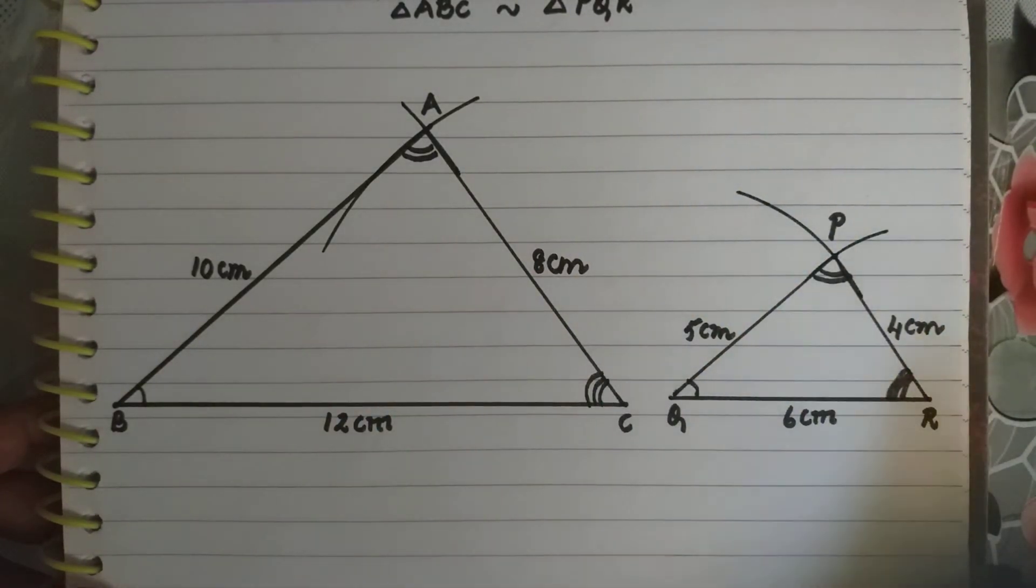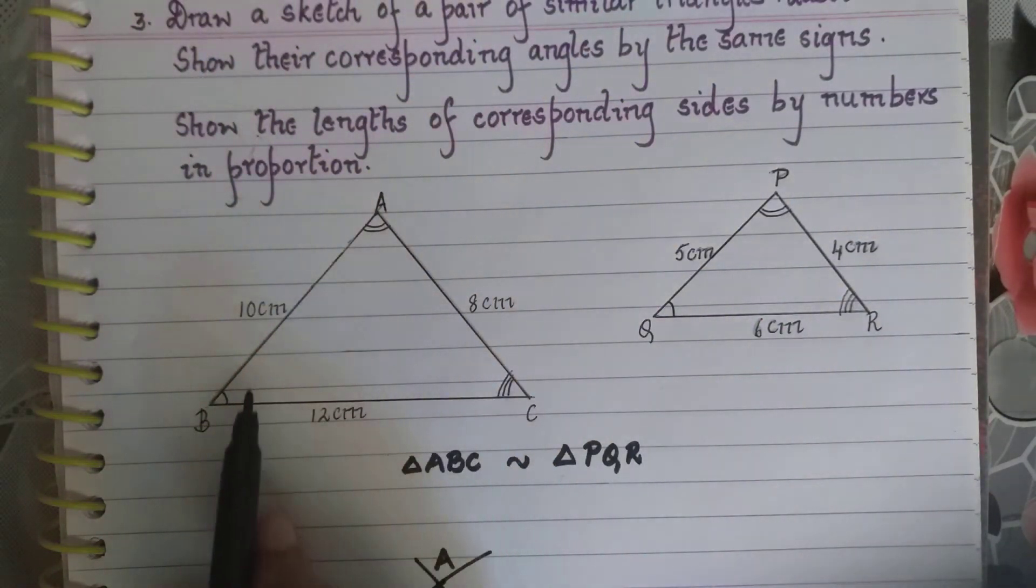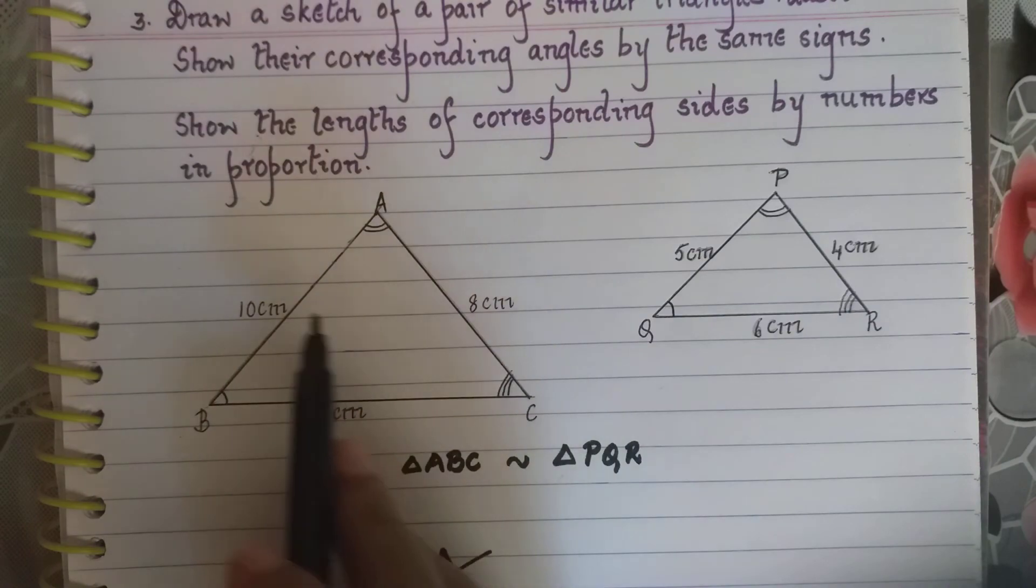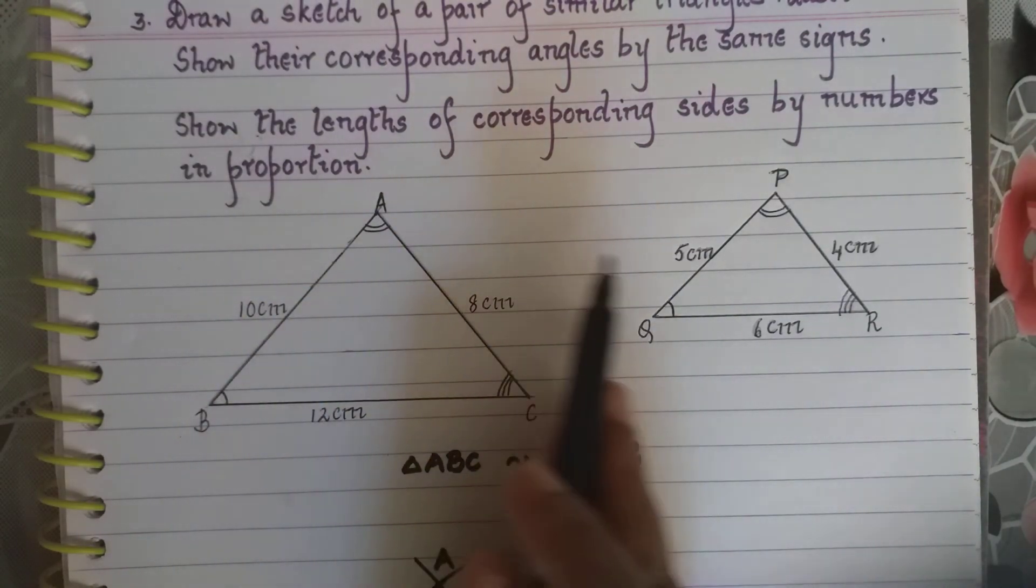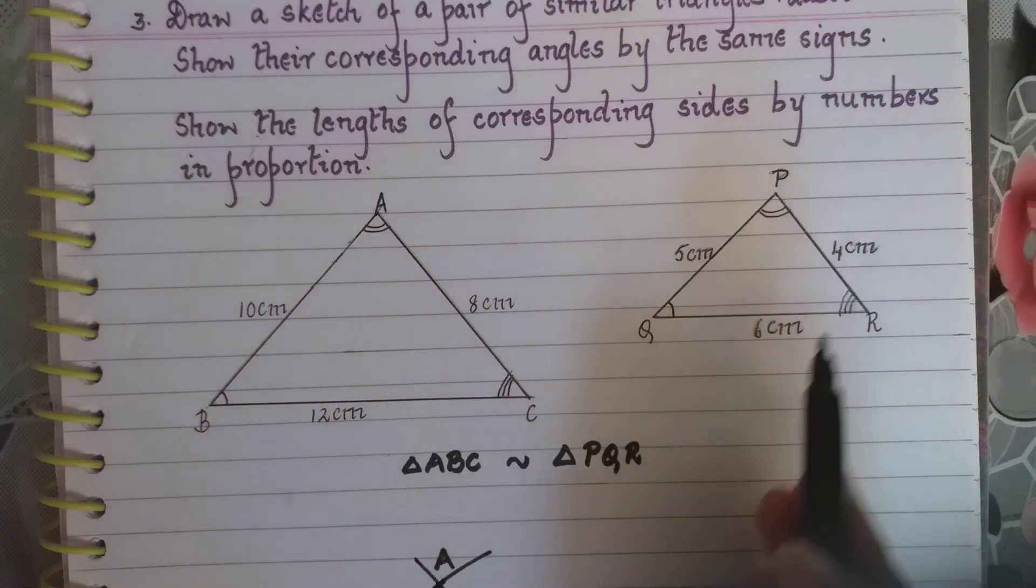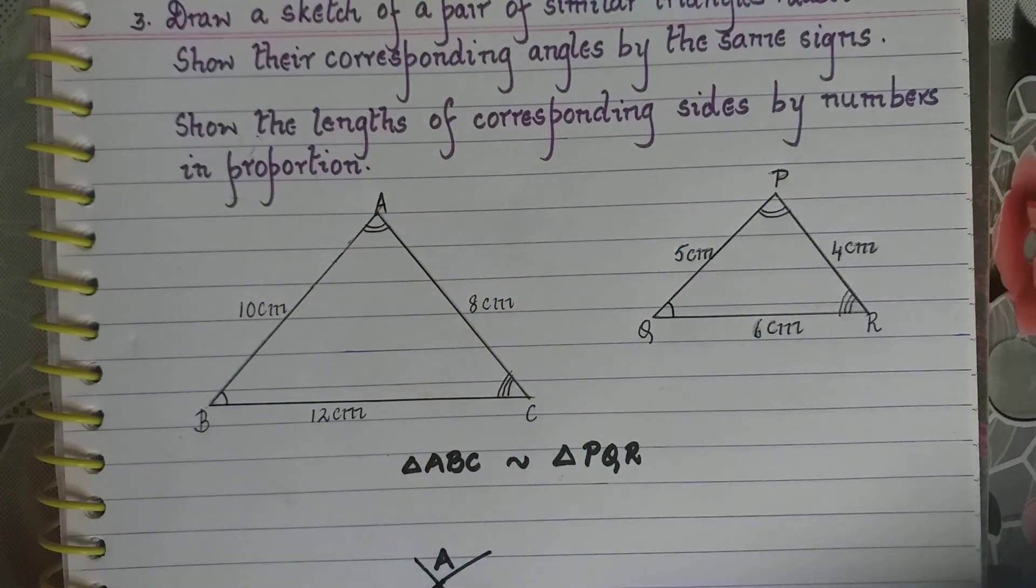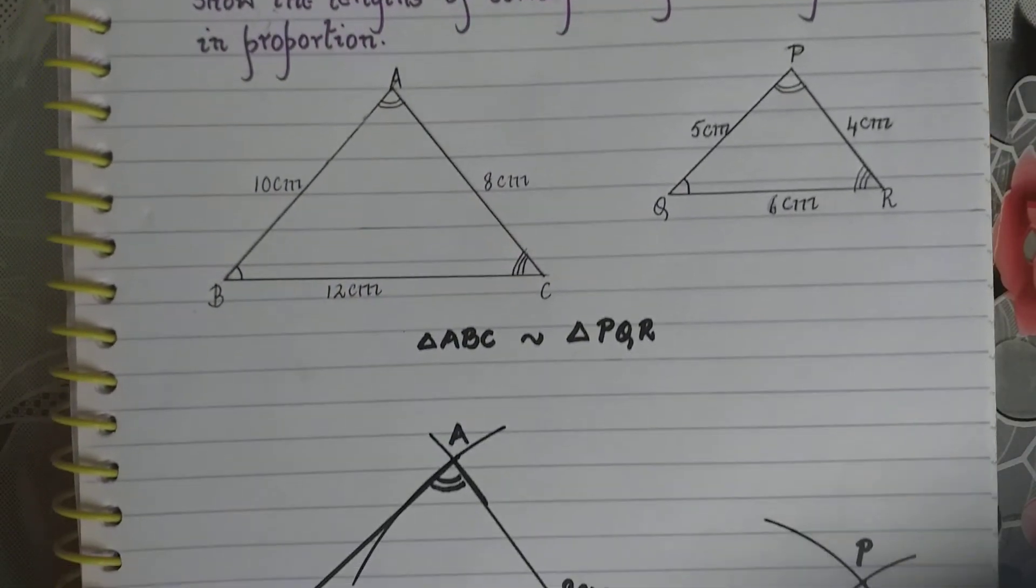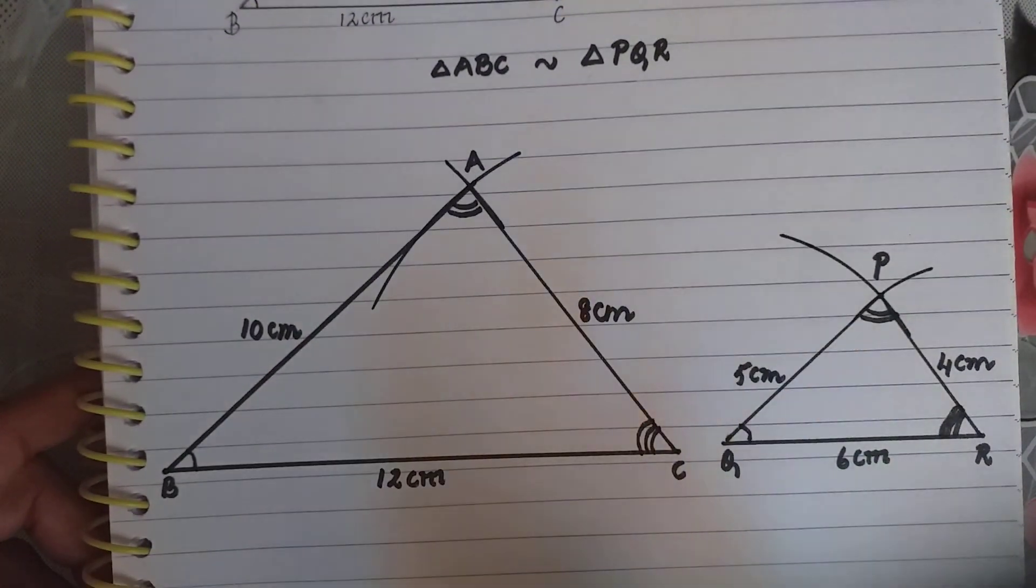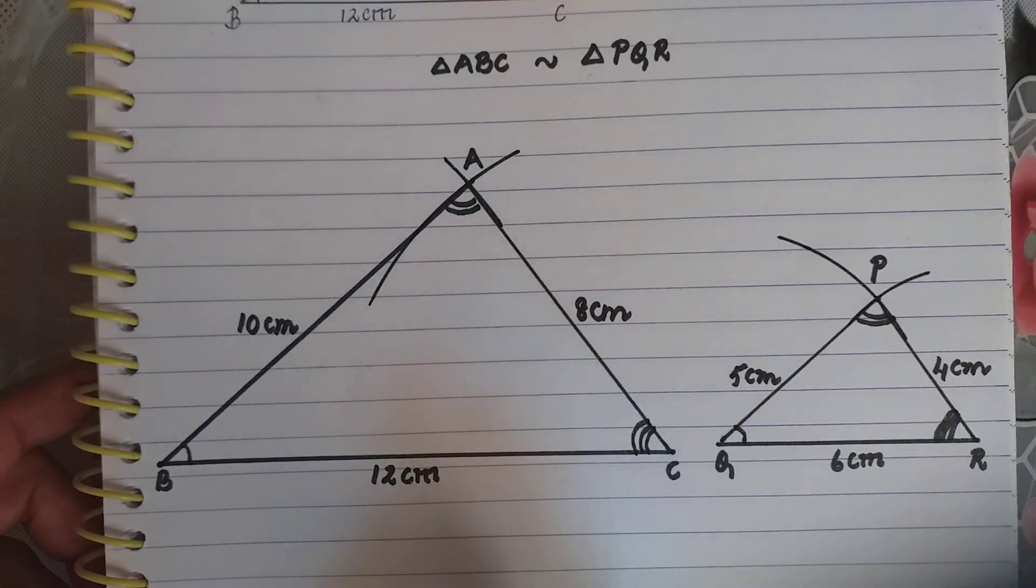So this is how we sketch it. Here I have taken triangle ABC with measures two times that of triangle PQR. You can take two times or three times the measures of the other triangle. So these two are a pair of similar triangles.